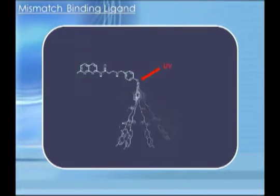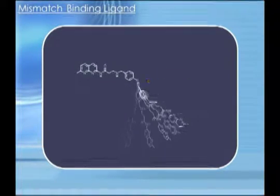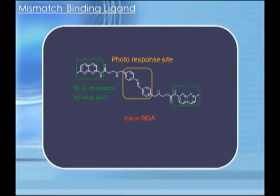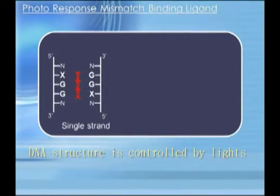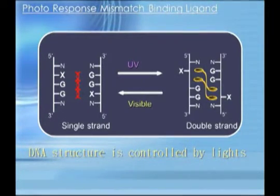We have also synthesized a molecule that has a mismatch binding site and a photoresponse site. It has both cis and trans forms, which can be made to alternate with one another by using radiated ultraviolet and visible light. The molecules can bind to DNA or RNA and control the structures by an external stimulus. We can control the DNA or RNA structure by photoresponsive mismatch binding ligands with the radiation of ultraviolet and visible light.